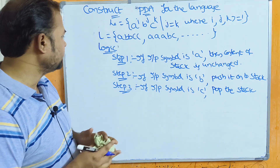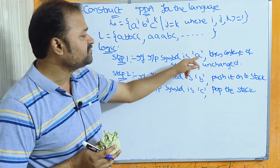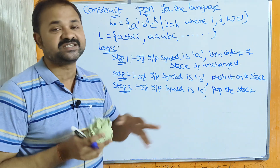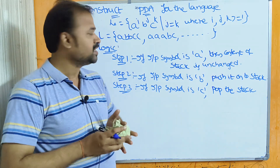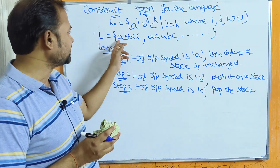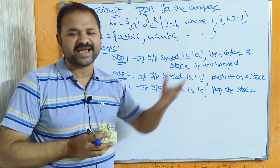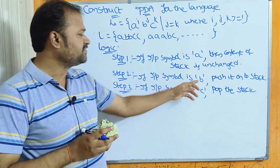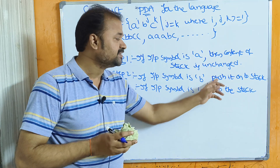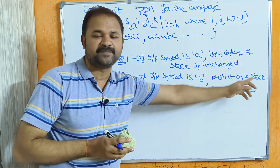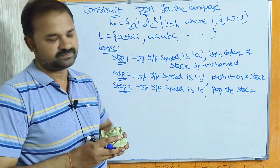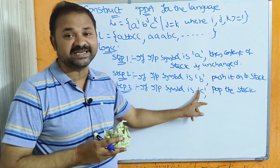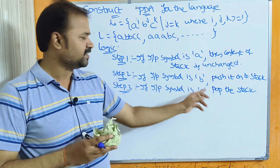Let's see the logic. Step 1: if the input symbol is a, then the content of the stack is unchanged, because we can take as many a's as we want. Step 2: if the input symbol is b, then push b onto the stack. Step 3: if the input symbol is c, then pop the stack.